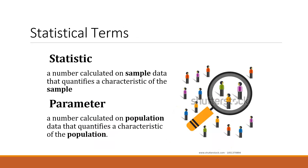A statistic is a number calculated from sample data that quantifies a characteristic of the sample — for example, the mean, standard deviation, or correlation of a sample. Don't be intimidated by this term. If you're lucky enough to get your entire population, it's no longer called a statistic — it's called a parameter. So the mean income of all Filipinos, if you interviewed everyone, is a parameter. When dealing with the population, we use terms like population mean, population standard deviation, and population variance.